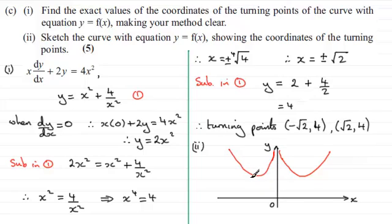And we've got our two turning points, this point here, this point here, and the coordinates then of those two turning points are going to be minus root 2, 4. And on this side, root 2, 4.